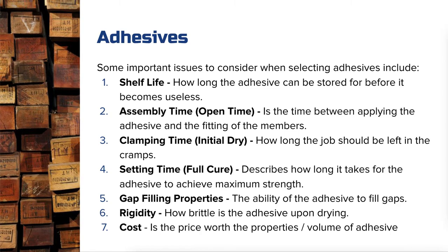Clamping time is how long it needs to be in a clamp at a minimum before you can take it out and start doing things with it. Full cure time means that even though you've taken it out of the clamps after maybe 10 minutes, that doesn't necessarily mean the glue is at its maximum strength. So when does the glue reach its maximum strength — what we call its full cured stage? Those are the three times we think about.